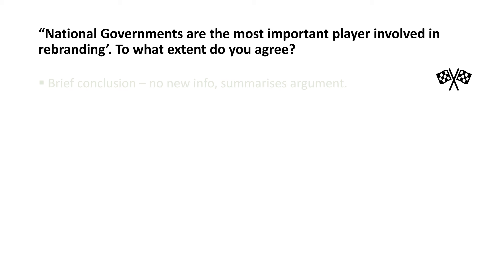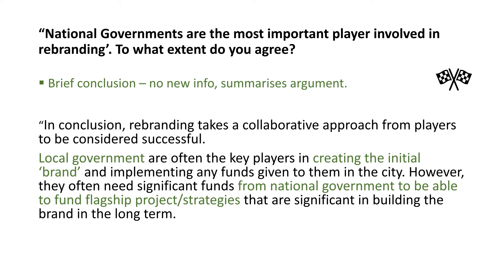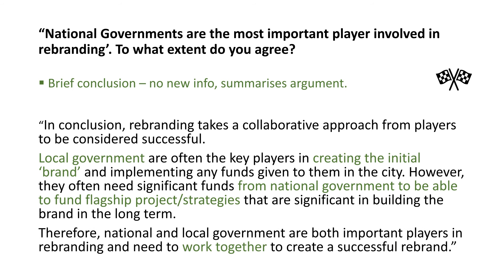Now coming to the end, I want to write a conclusion. Often the worst essays try to write too much on their points and then tail off at the conclusion, so the examiner doesn't know where the writer stands. I don't need any new information — I'm essentially just summarising what I've already said. What I'm trying to say is that national governments are important but they often need to work in collaboration. Rebranding takes a collaborative approach to be considered successful — local governments often create the initial brand and implement strategies, however unless they have significant funds from national government, they can't make the long-term rebrand work. So I am partially agreeing, saying national governments are important but also that local government has to work with national government to achieve a successful rebrand.